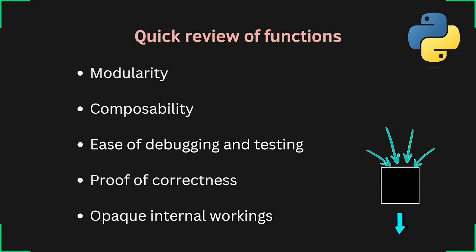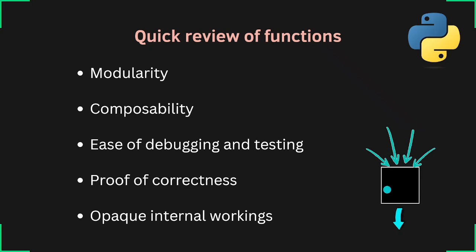Quickly, a review of functions. I mentioned during the functions session that functions have a lot of advantages. The main advantages of using functions are modularity, composability, ease of debugging and testing, proof of correctness, and opaque internal working. The part I want to focus on is opaque internal working. Each function works like a black box — you do not need to know what is implemented or how it is implemented inside. All you need to know is how many inputs it takes and what output it gives. Every function takes zero or more inputs as parameters, does something, and gives you the output via the return statement.